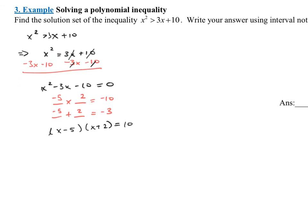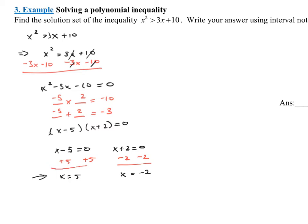I made a small error — that shouldn't say equals 10, it should say equals zero. By the zero product rule, if two numbers multiply to be zero, one or both factors must equal zero. So we set each factor equal to zero and solve. That gives x equals 5 and x equals negative 2. These are the zeros — where the function crosses the x-axis. As ordered pairs, the x-intercepts are (5, 0) and (negative 2, 0).